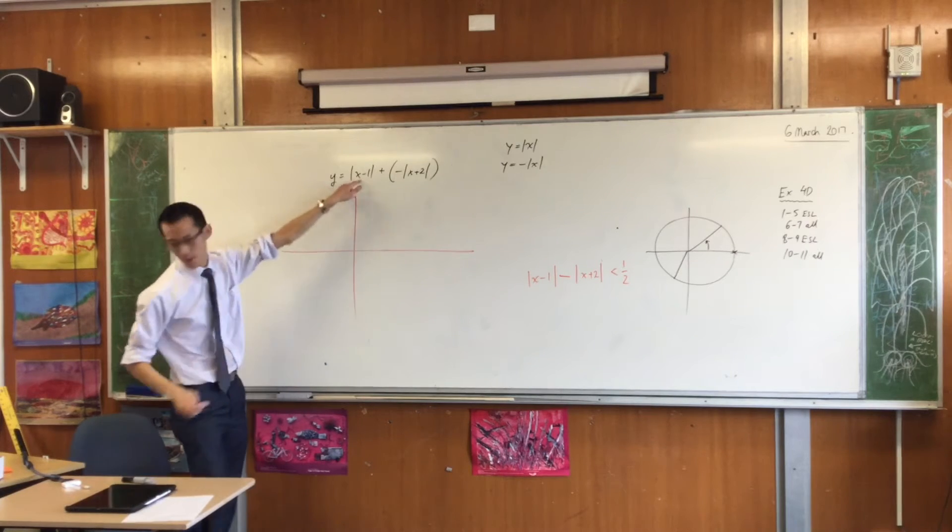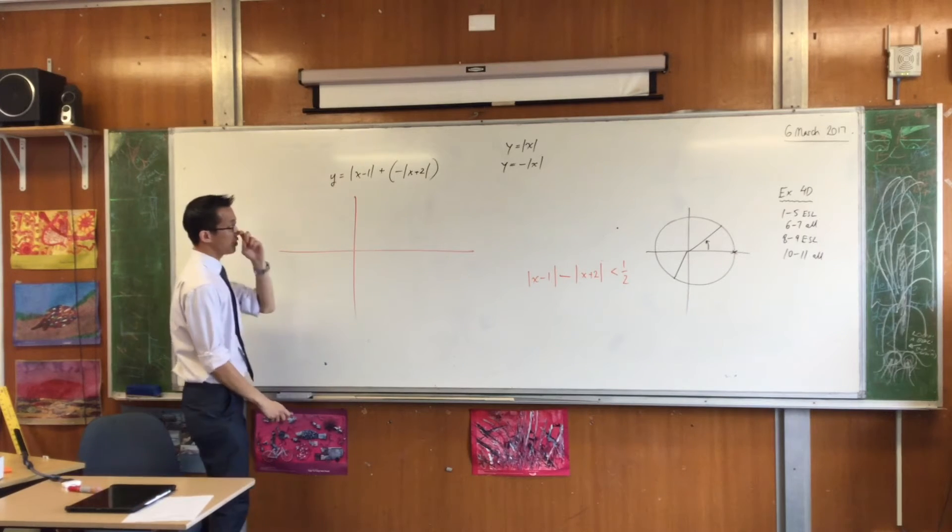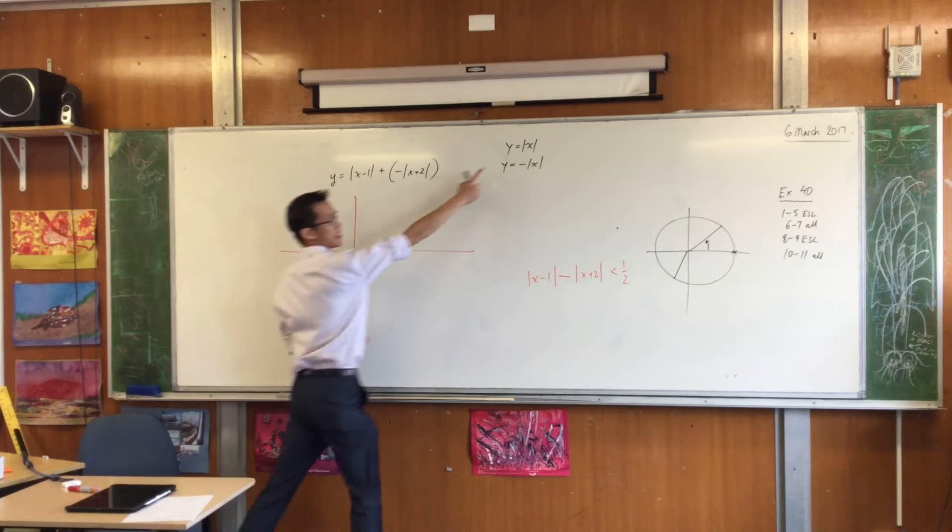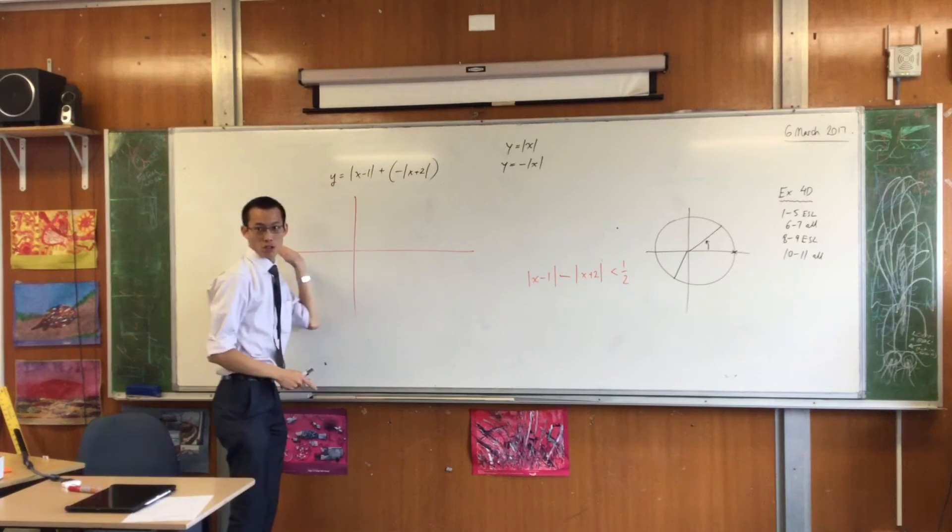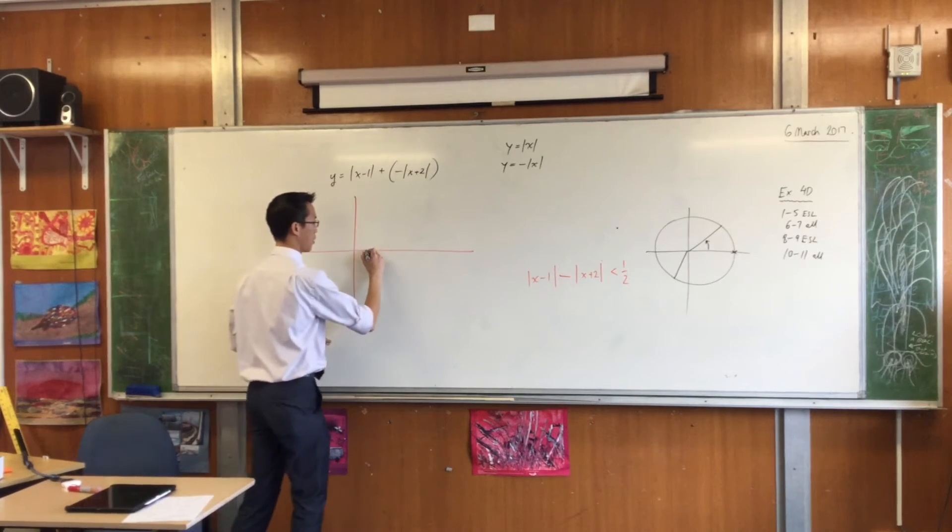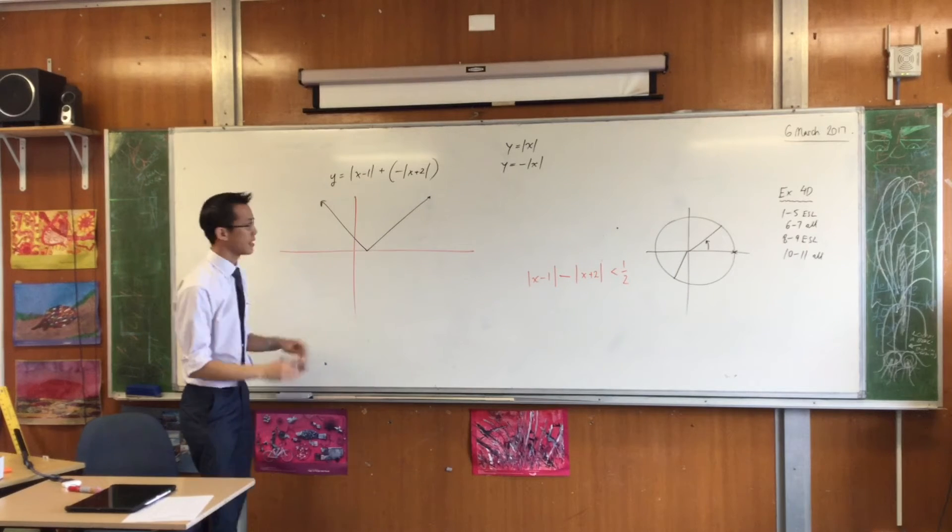Here's my axes. Absolute value of x minus 1. That's been shifted. This is this, right? But it's been shifted one unit to the right. So I'm just going to quickly draw on that. There we go. That's all the detail that I need.